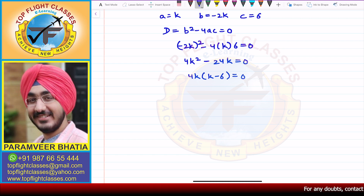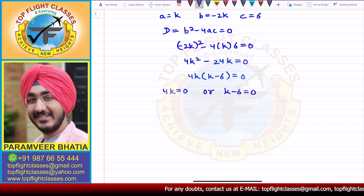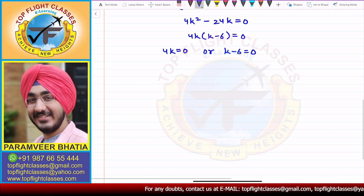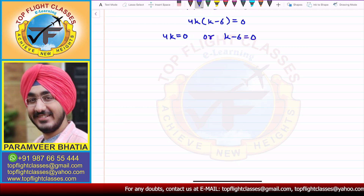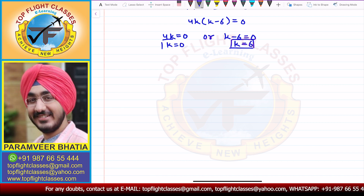Taking 4k common out: 4k(k - 6) = 0. So either 4k = 0, giving k = 0, or k - 6 = 0, giving k = 6.